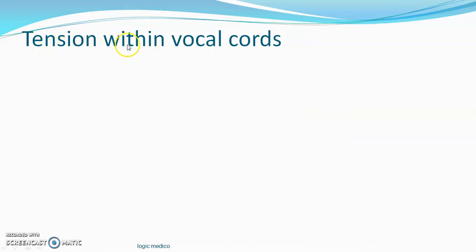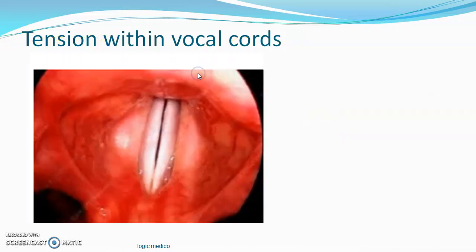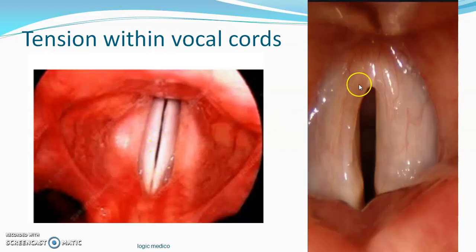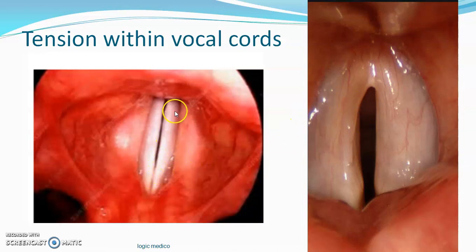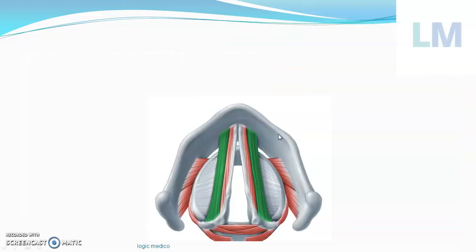The action of vocalis is alteration in tension within the vocal cord. The vocalis can either stretch the vocal cord or relax it. You can see the tensed vocal cord — stretched, shiny, and glistening — and you can see the waviness in the relaxed vocal cord.